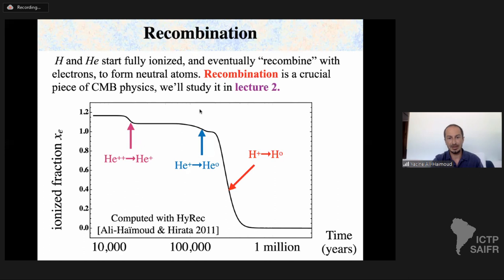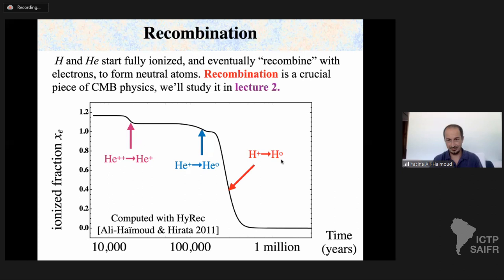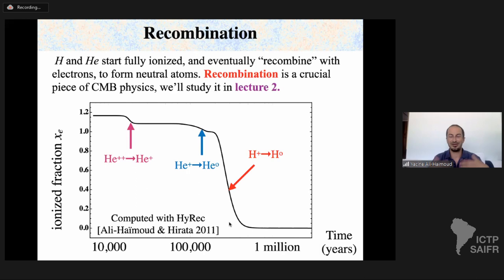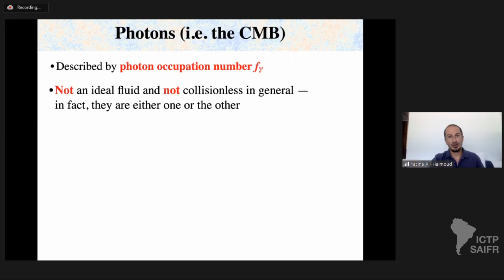An important piece of baryon physics is that protons and electrons can form neutral hydrogen — the process of recombination. Helium nuclei go from fully ionized to singly ionized to neutral, and then electrons and protons combine for the first time to form neutral hydrogen. This takes place ~300,000–400,000 years after the Big Bang, at redshift ~1100, when all physical scales in the universe were a factor of ~1000 smaller than today.